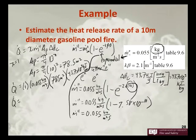So our heat release rate is equal to 1 times 0.055 times 78.5 times 43.7 times 10 to the 3rd. That's 188,675 kilojoules.